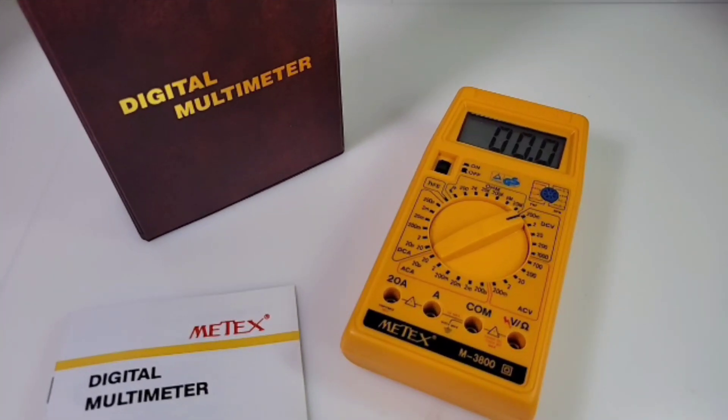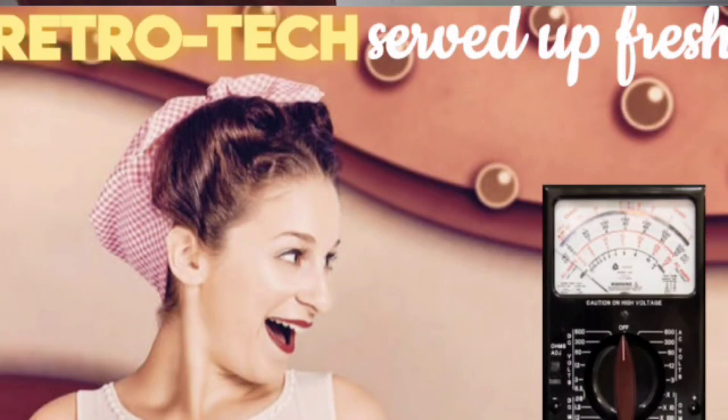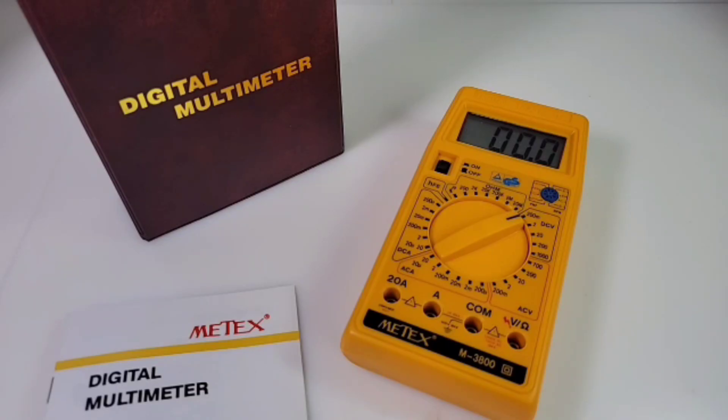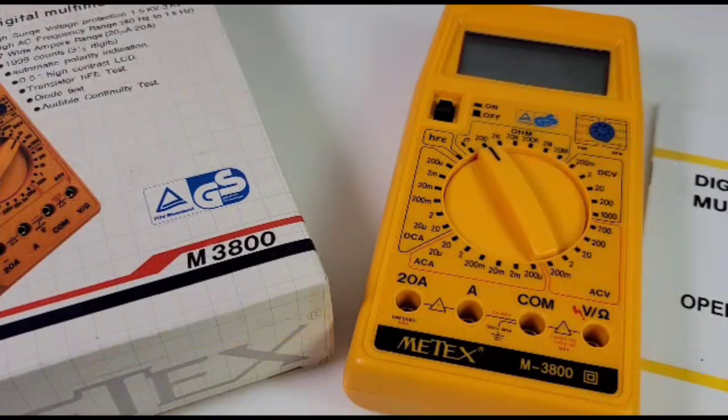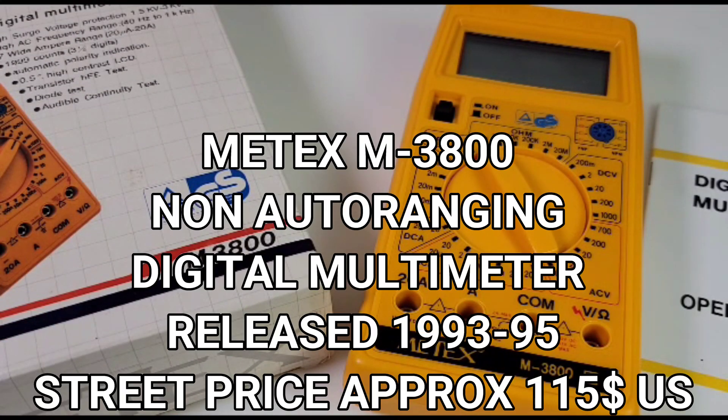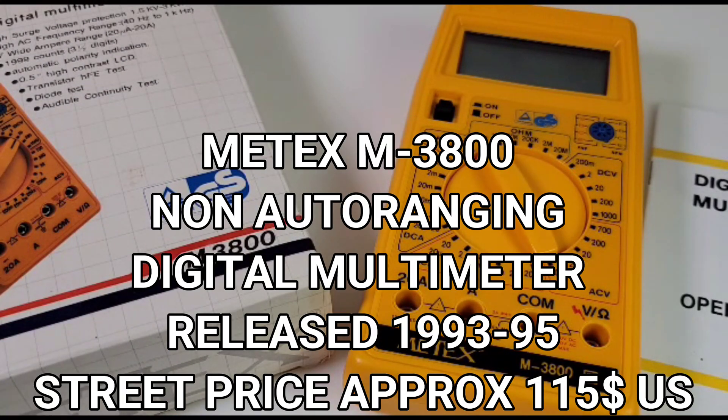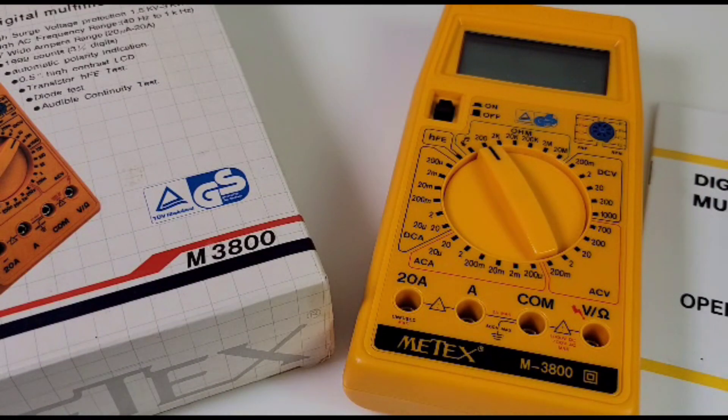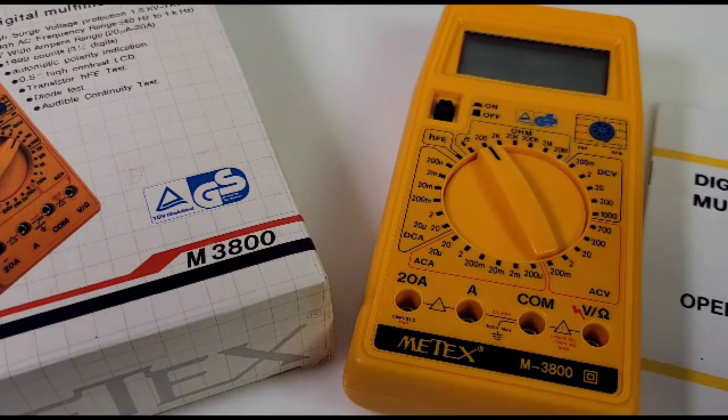Hey everybody, welcome back to another edition of RetroTap, where we aim to bring you some of the best vintage multimeters and electronic paraphernalia ever conceived. Today in the Vintage Spotlight, we're looking at the all-new, well actually 30-year-old new, Metex M3800 for your vintage pleasure. Let's take a look.